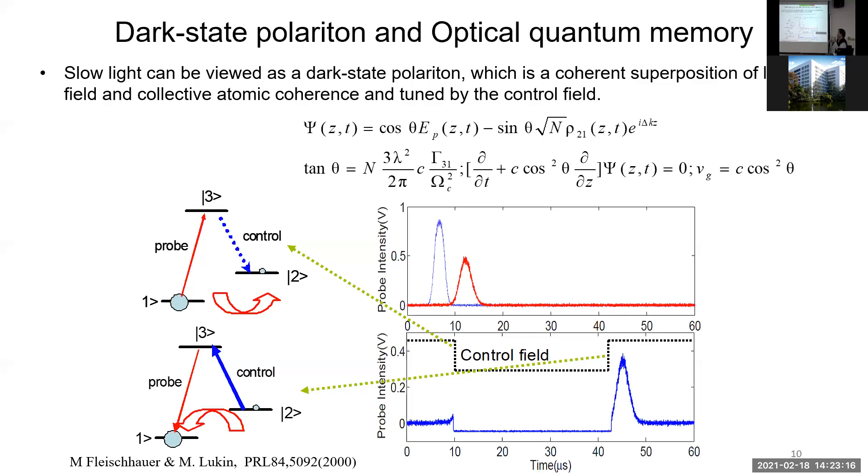Around 2000, Professor Fleischhauer and Lukin proposed that you can use this EIT media as quantum memory. They identified that the slow light can be understood as a coherent superposition between optical field and the ground collective atomic coherence. Their propagation velocity is exactly the group velocity of slow light. Most important of all is that the field or the atomic coherence can be tuned by the intensity of a control field. So when you turn off the control field, the light can be converted to collective atomic coherence. When you turn on control field again, the collective atomic coherence can be converted to optical field again. This works for any kind of quantum light. This is so-called dark state polariton, which can be utilized as an optical quantum memory.